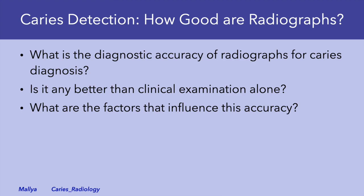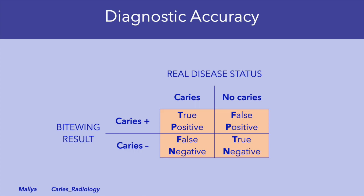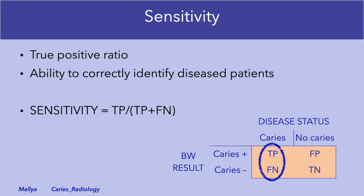How good are radiographs for caries diagnosis? Do they provide any information beyond the clinical examination? Remember that the bitewing radiograph, just like any other diagnostic test, is not always correct. What we identify as caries on the radiograph may truly represent caries, or may represent sound enamel and dentin that we incorrectly called caries. Likewise, what we identify as absence of caries may be truly sound tooth structure, or may be a caries lesion we have not been able to detect. There are two measures of diagnostic efficacy: sensitivity, or the true positive ratio, tells us how good our test is to correctly identify diseased patients. A test with low sensitivity has a very high number of false negative results.